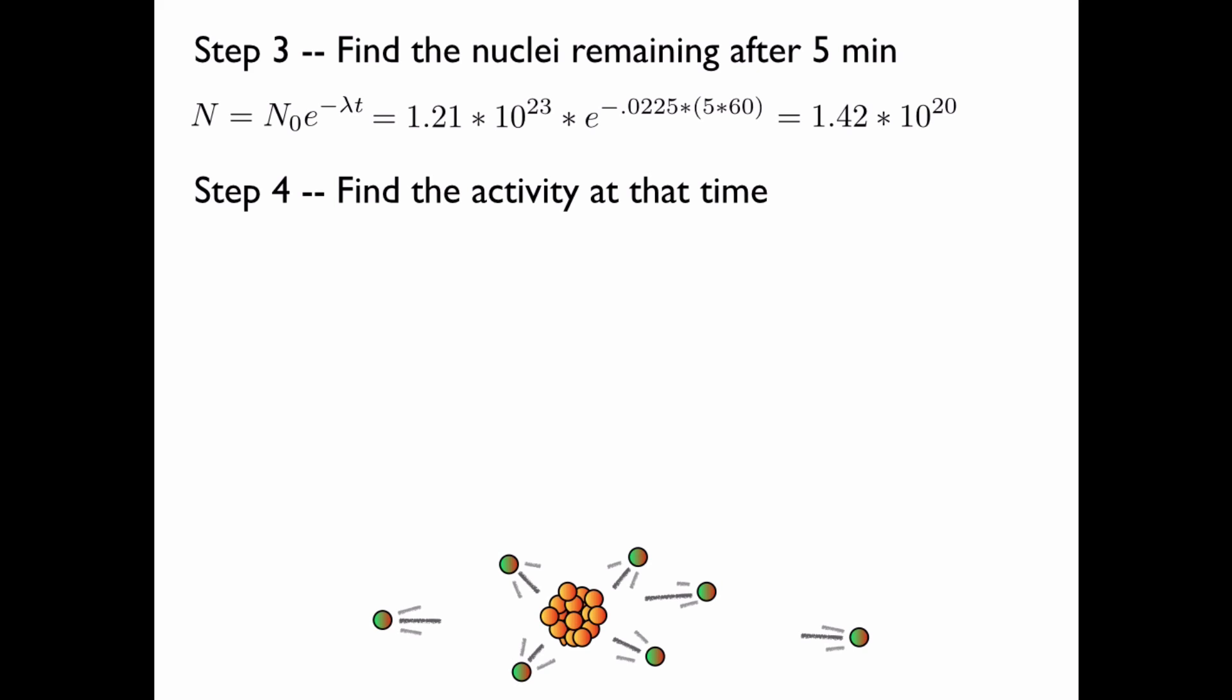Now let's find the radioactivity at that time. The radioactivity, i.e. the number of decays per second, the change in nuclei per change in time, is equal to lambda, the decay rate, times n, the number of nuclei present at that time.